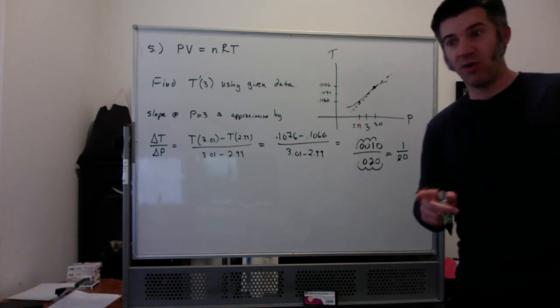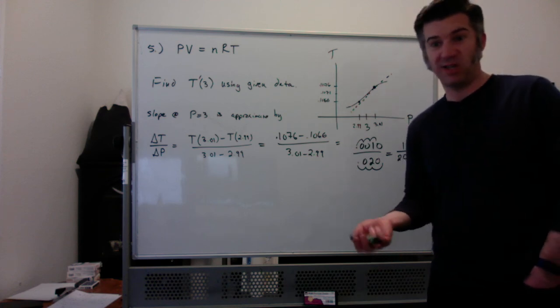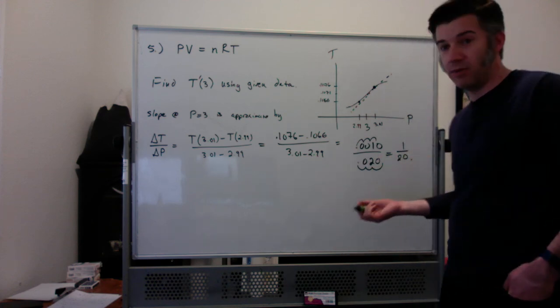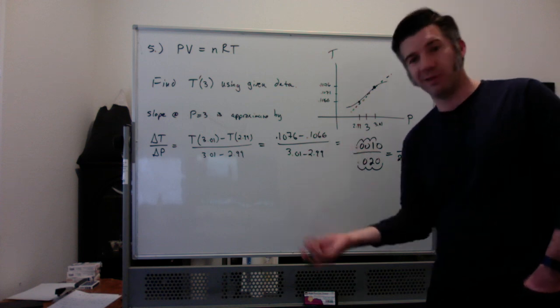The solutions say 1/2 or 0.5. That's actually incorrect; it should be 1 over 20. So make note of that.